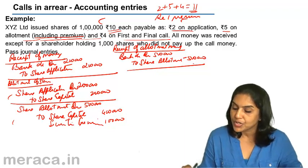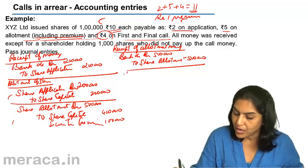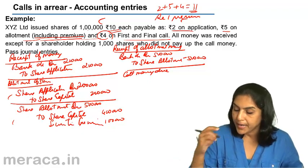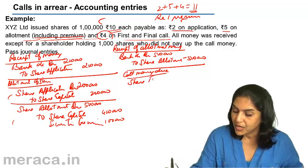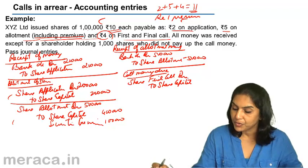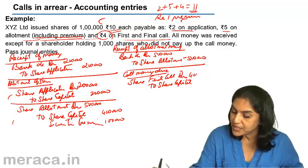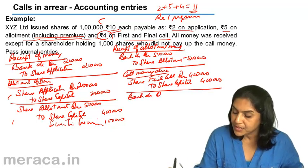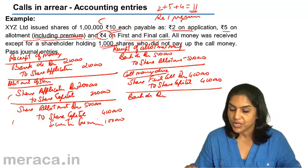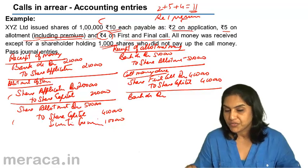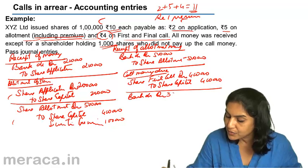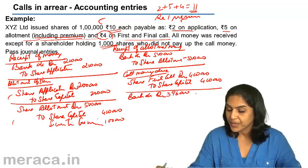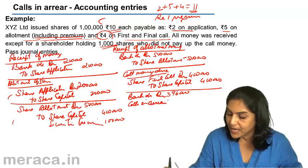Finally, call money is due at 4 per share. Entry when the call is made: share final call account debit to share capital — 4 per share into 1 lakh shares = 4 lakhs. On receipt of money, bank account debit — we receive all except from a shareholder holding 1,000 shares, so 1,000 into 4 = 4,000 is not received. We receive 4 lakh minus 4,000 = 3 lakh 96,000. We transfer: calls in arrears account debit 4,000 to share final call account 4 lakhs.